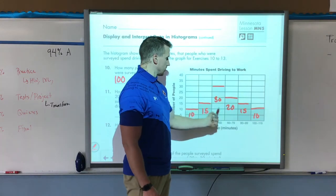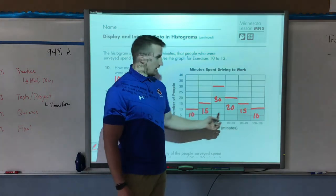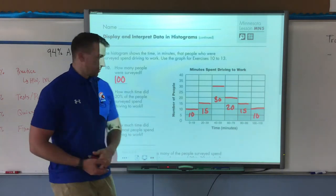Again, we can check our counting: 50 here, 15, 15 is 30, that's 80, 90, 100. So we have 100 total people.